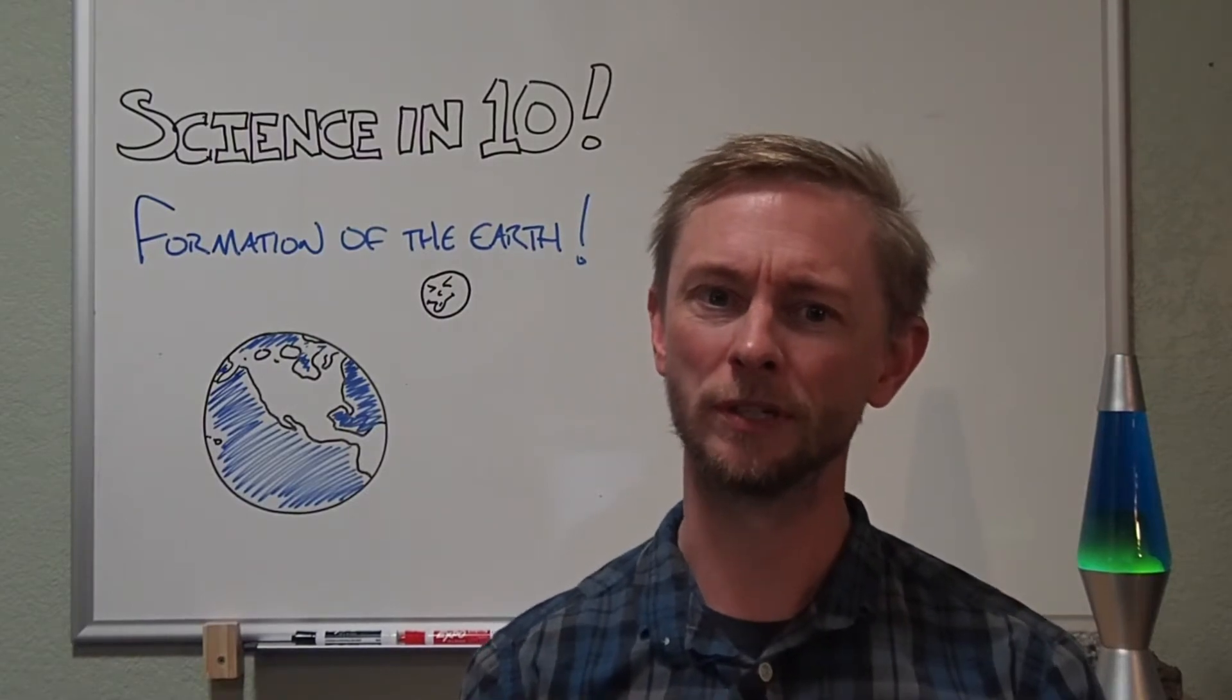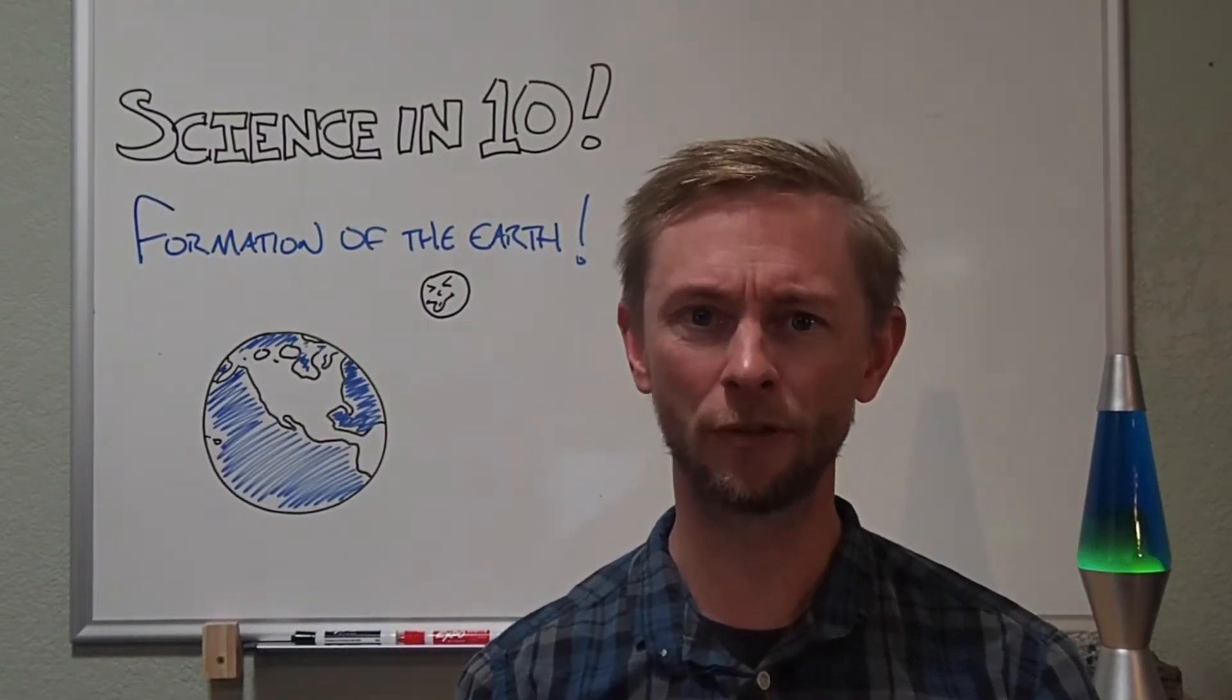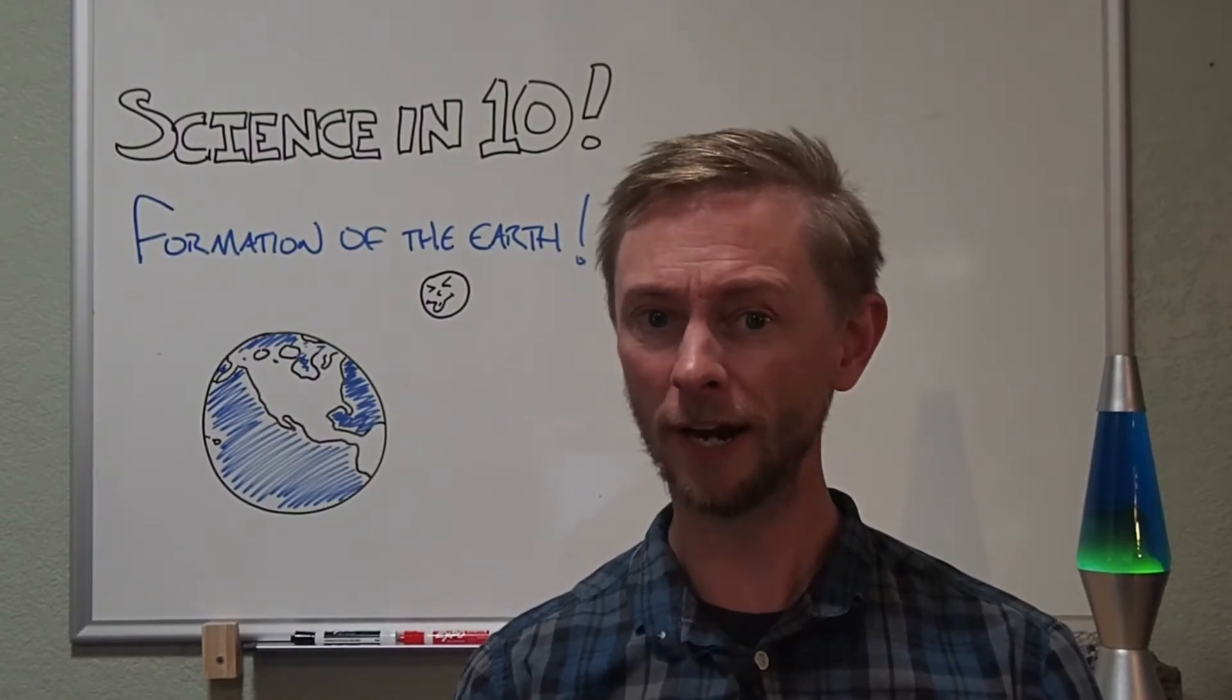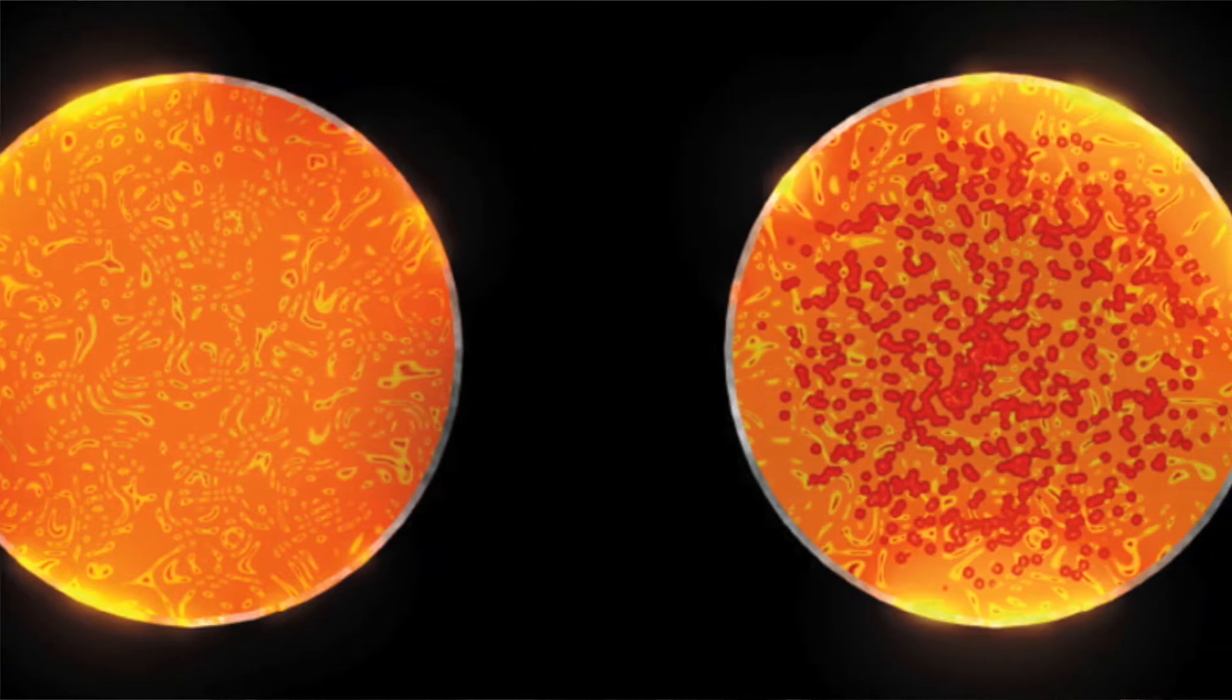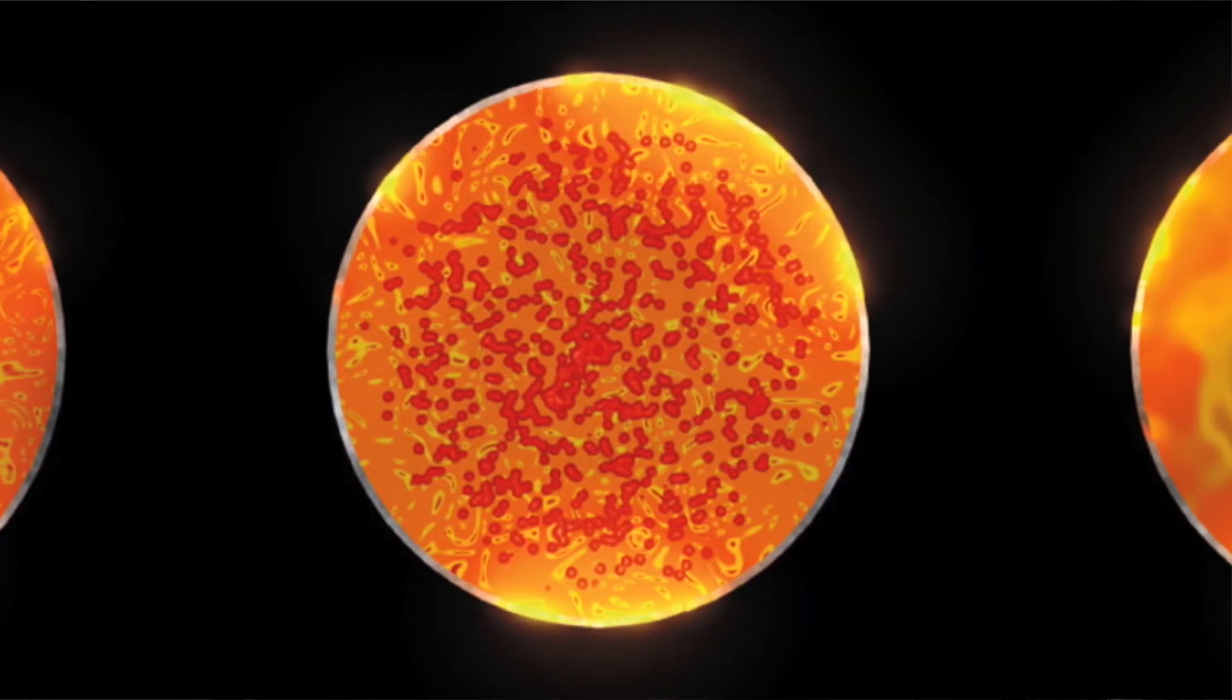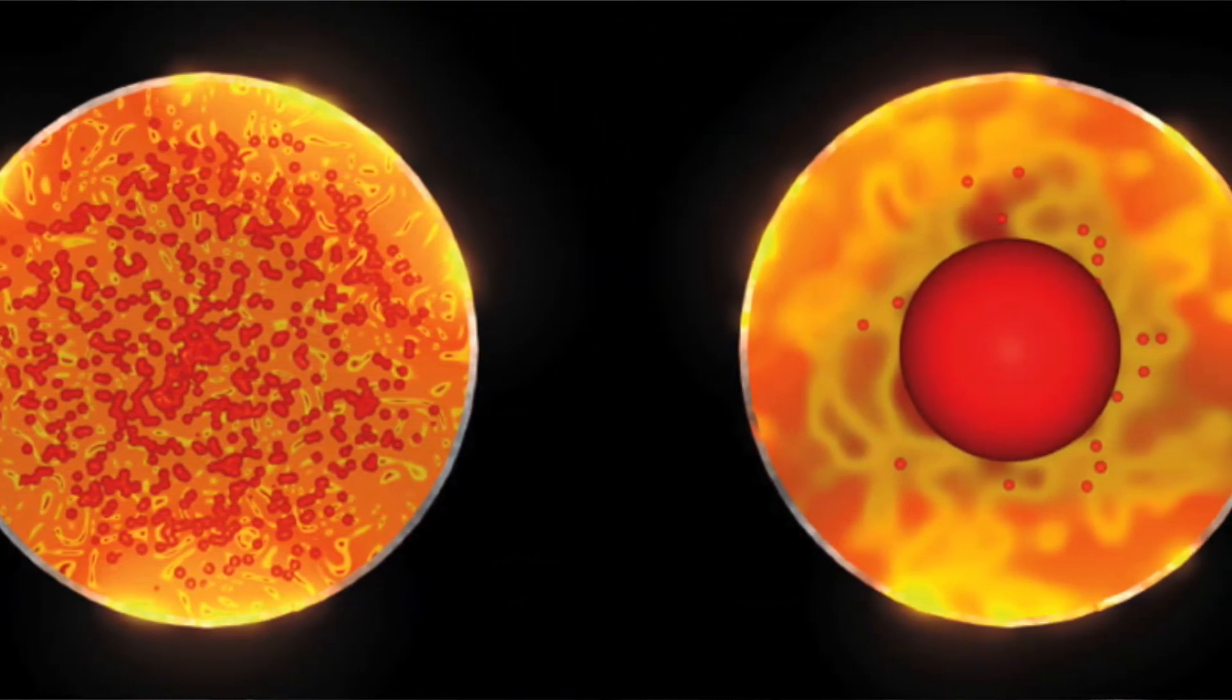Our early Earth, though it may have been completely molten, its composition was not evenly distributed throughout its interior. Heavier elements such as iron and nickel began to sink towards the center of the planet in a process called density stratification, or planetary differentiation.